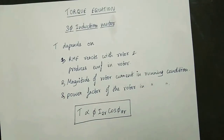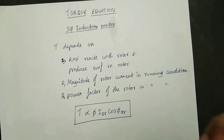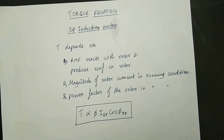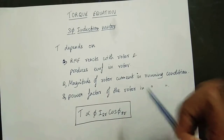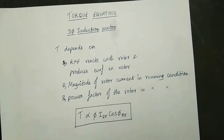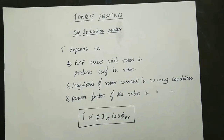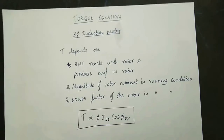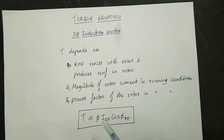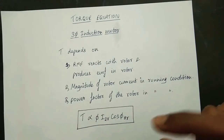The magnitude of the rotor in running condition — the current reduces and limits the value of the torque. The power factor in the rotor is a lagging power factor. In the induction motor there is a lagging power factor. The torque equation depends on: torque is proportional to flux, rotor current during running condition, and the power factor of the rotor during running condition.